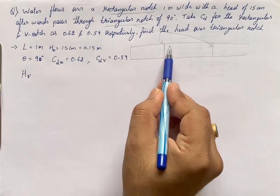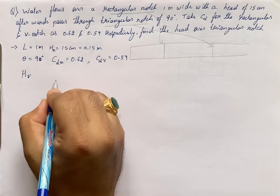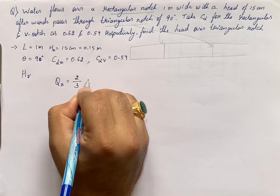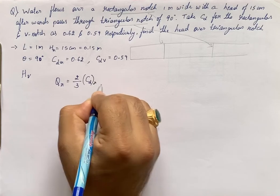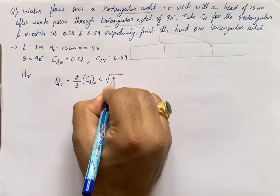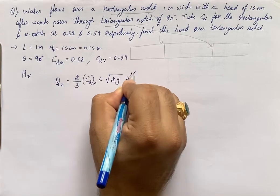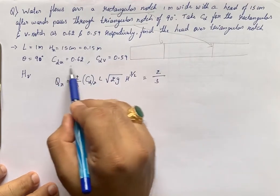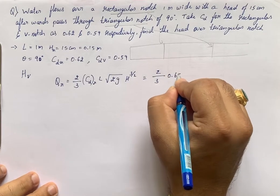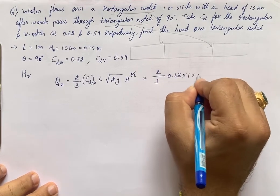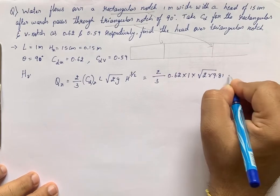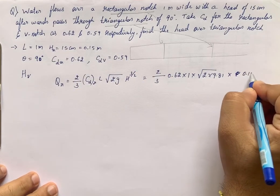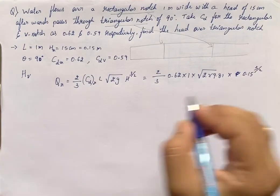First I shall write the discharge through a rectangular notch: Q_r = (2/3) × cd_rectangular × L × √(2g) × H^(3/2). Substituting the values: (2/3) × 0.62 × 1 × √(2 × 9.81) × (0.15)^(3/2).